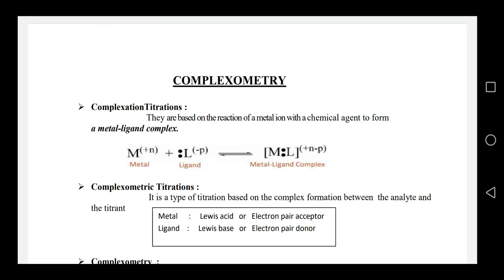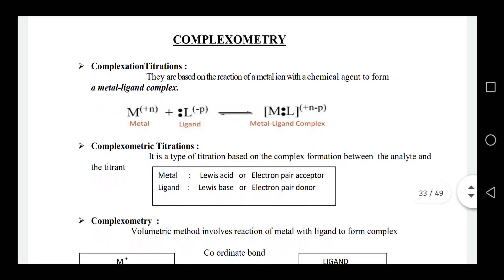Today we are going to discuss complexometric titration. Complexation titration is based on the reaction of a metal ion with a chemical agent — a complexing agent — to form a metal-ligand complex. Metal ligand complex is formed; complexometric titration is a type of titration based on complex formation between the analyte and the titrant.